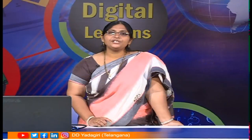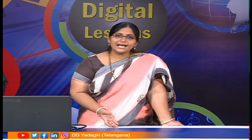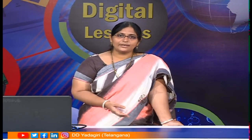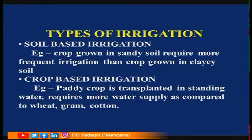Irrigation is of two types depending on the type of crop and type of soil. Sandy soils require more water. Some crops require more water, others less — for example, paddy requires more water than other plants. Crop grown in sandy soil requires more irrigation than crop grown in clay soil. Paddy transplanted in standing water requires more water supply compared to wheat, grams, and cotton.